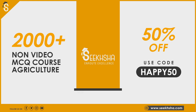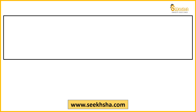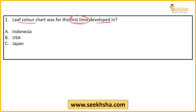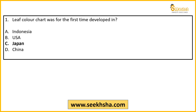Let's get to the first question quickly. The first question is on the Leaf Color Chart: 'Leaf Color Chart was first developed in which country?' Options include Indonesia and others. The correct answer here is option C — Japan. The Leaf Color Chart was first developed in Japan.